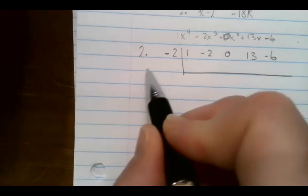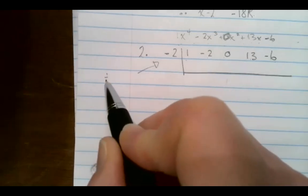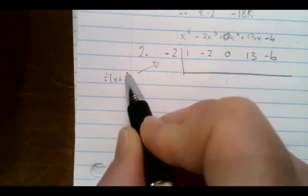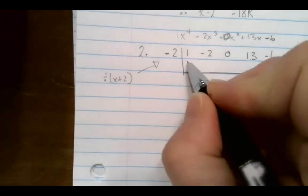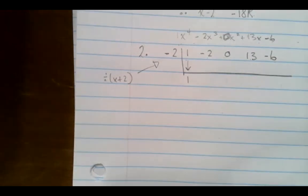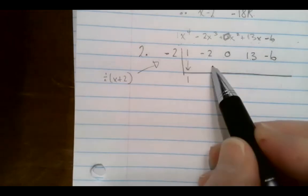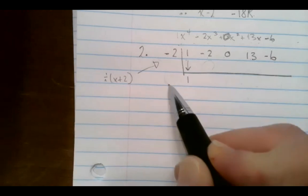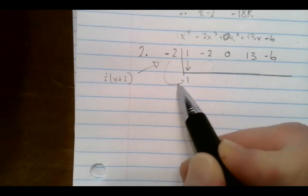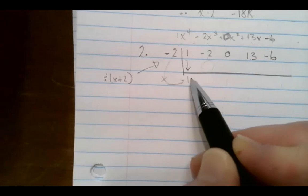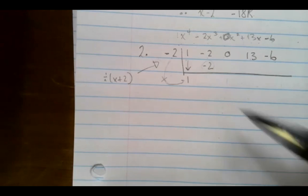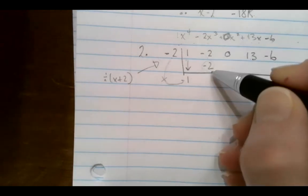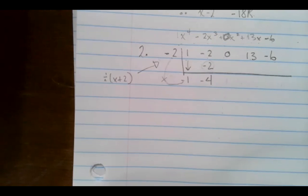I'm going to divide by x plus 2, which means I have to put a negative 2 there. So now, first thing I do is just bring this 1 down. Now I want to find what number is going to go here, and what I do is multiply these two guys. So negative 2 times 1 is negative 2.